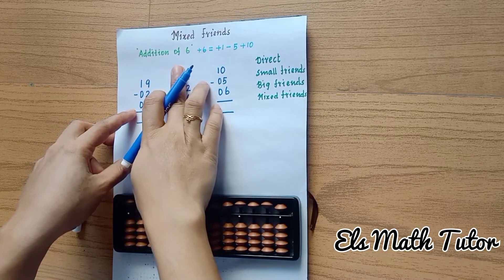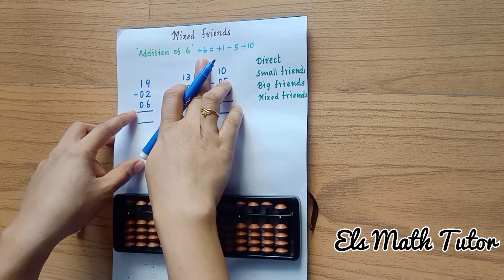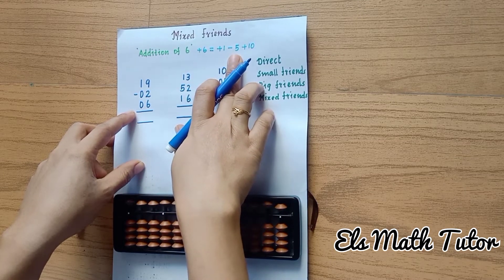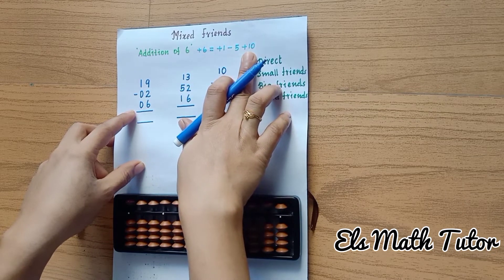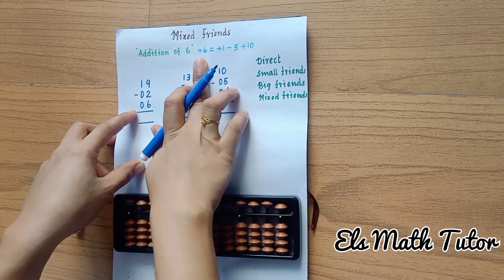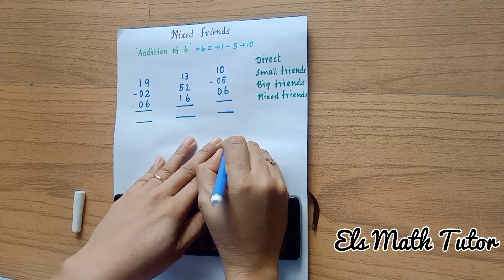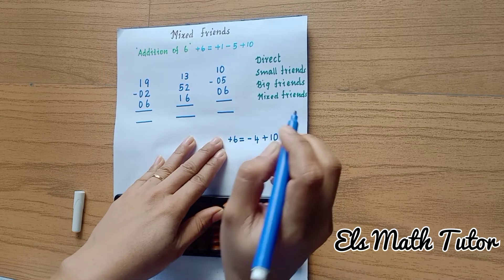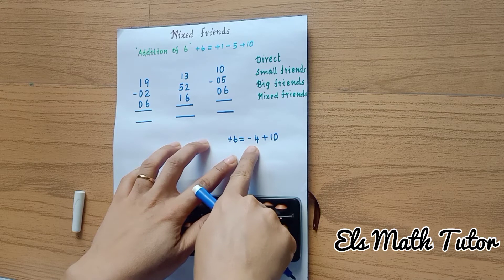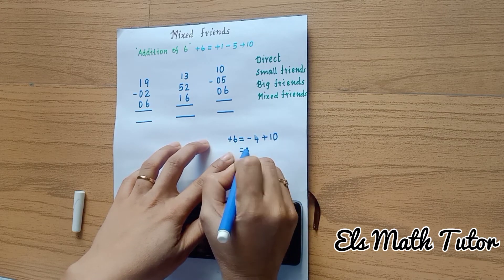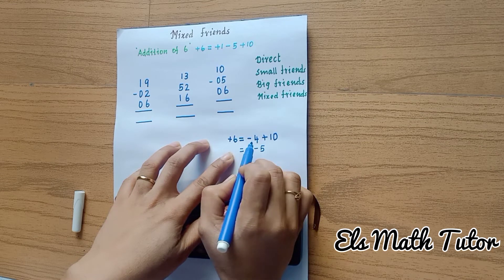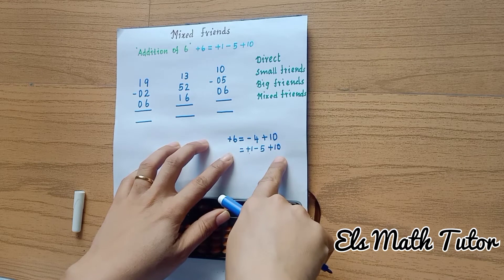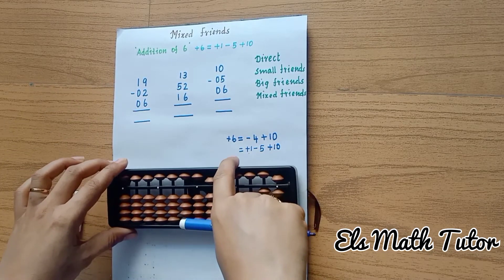Today's class is only addition of six — we are going to use only the plus six formula. So what is the mixed difference plus six formula? Plus six is equal to plus one, minus five, plus ten. How does this formula come? What is the plus six big friends formula? Plus six formula is minus four plus ten. And what is the minus four formula? Minus four formula is plus one minus five. So minus four becomes plus one minus five, and then the plus ten follows.